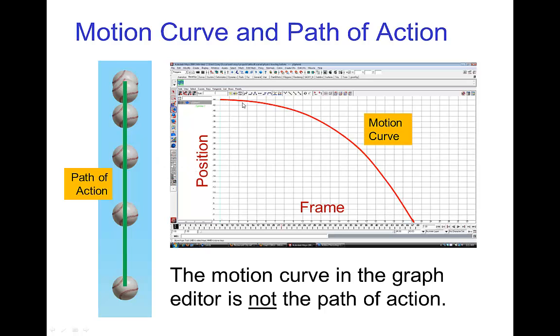If we look at the position of the ball on each frame, that's what is the motion curve in the graph editor. That motion curve happens to be a parabolic arc. But you see the motion curve is itself not a straight line. However, the path of action is a straight line. One way to remember this is that the path of action is a trajectory in space, whereas the motion curve is a curve which is a graph in time—time being the frames.